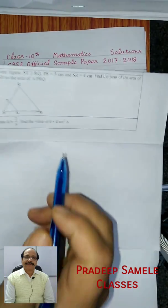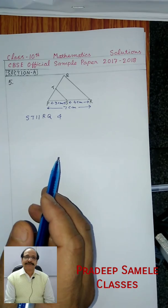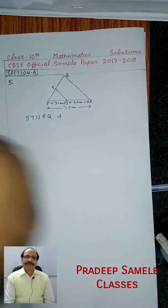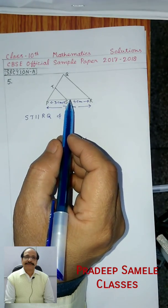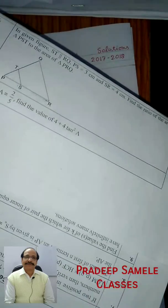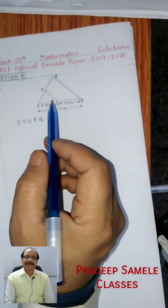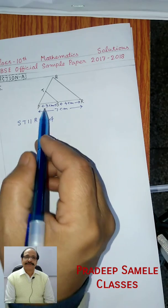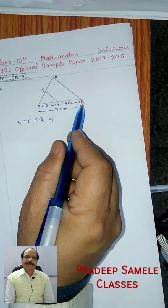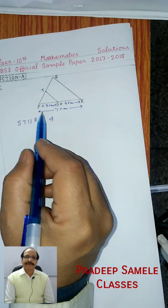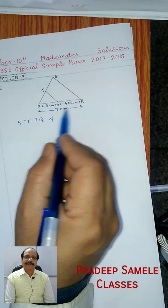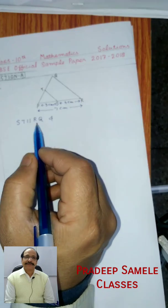So what is the ratio? First, the diagram — we have stated the parameters here. PS is equal to 3 cm, SR is equal to 4 cm. PS plus SR means PR is equal to 7 cm.